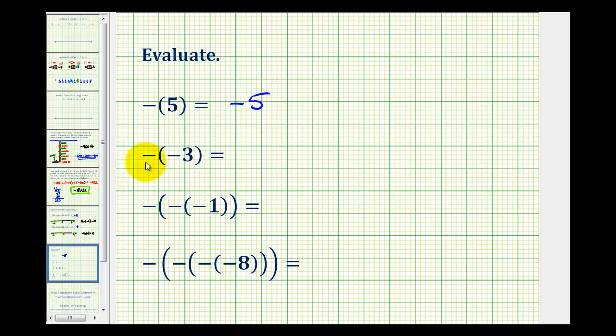But thinking of a negative sign as an opposite can sometimes be helpful, especially on the second example. Again, we can think of this as negative negative 3, but we could also think of this as the opposite of negative 3. Well, the opposite of negative 3 would be positive 3. So negative negative 3 is positive 3.